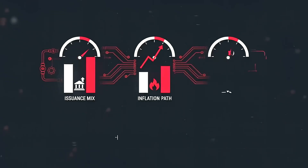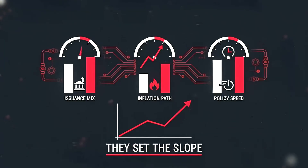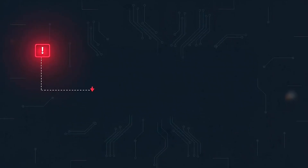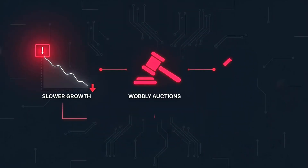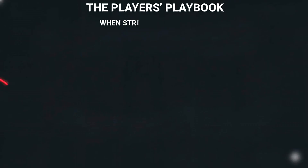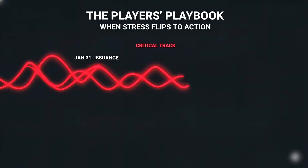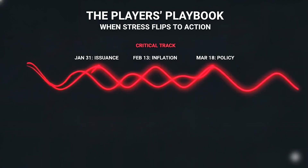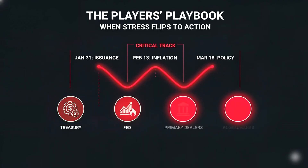If February CPI sits above three, the next cut slows. If March brings slower growth signals and wobbly auctions, banks tighten more. This is where it gets critical. The countdown put issuance, inflation, and policy on one track. Coming up: the player's playbook when stress flips to action.